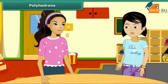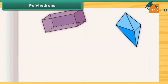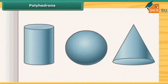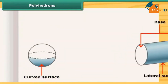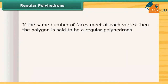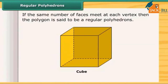Those solids are called polyhedrons. These all solids are polyhedrons. Are these objects polyhedrons? No, these are not polyhedrons, because they do not have flat faces. If the same number of faces meet at each vertex, then the polygon is said to be a regular polyhedron. A cube is a regular polyhedron because three faces meet at each vertex.